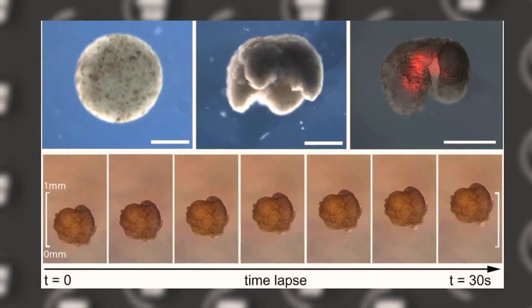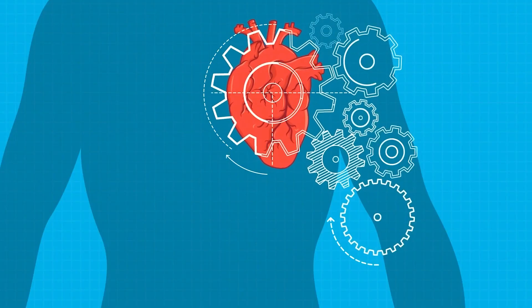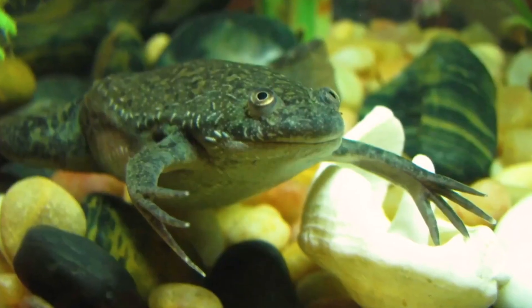Xenobots, as they are called, have two main components: skin cells and heart cells, both of which were obtained from the frog Xenopus laevis, after which they are named.